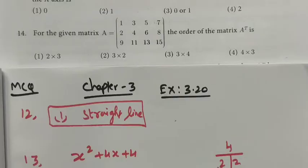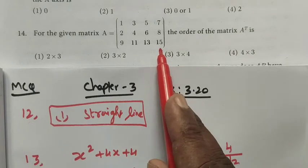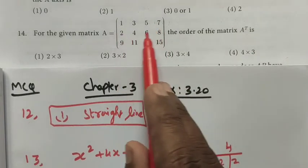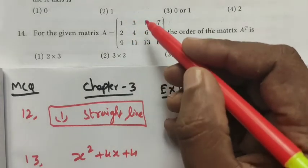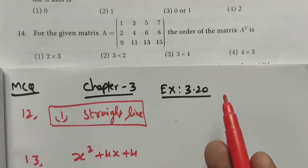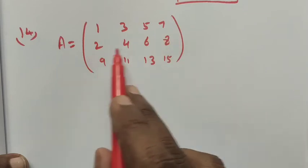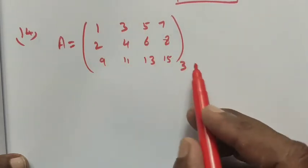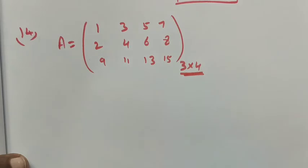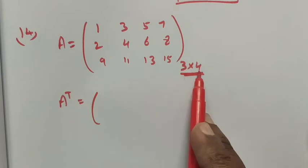Question number 14: for the given matrix A, find the order of matrix A transpose. First, we find the order of the matrix. It has 3 rows and 4 columns, so its order is 3 by 4. When you transpose a matrix, the rows become columns and the columns become rows.